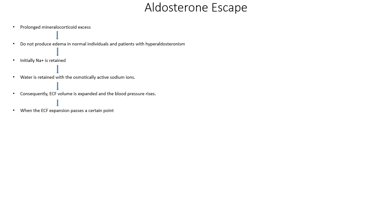When extracellular fluid expansion passes a certain point, there is over-stretching of the right atrial wall. From the right atrial wall, there is secretion of a special peptide called atrial natriuretic peptide. 'Natriuretic' means it enhances sodium passing through the urine. Because it is secreted from the atrium, it is called atrial natriuretic peptide, which in turn inhibits the epithelial sodium channel that was helping sodium reabsorption from the collecting duct under the action of aldosterone.